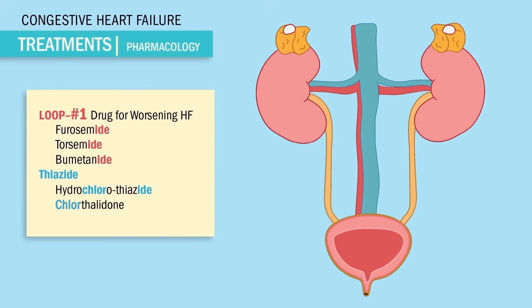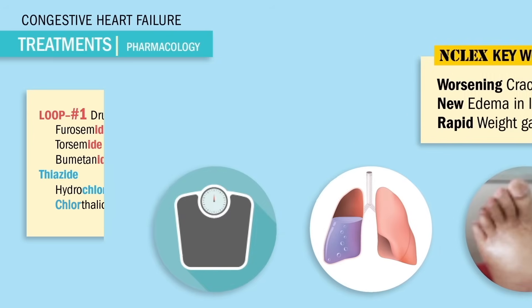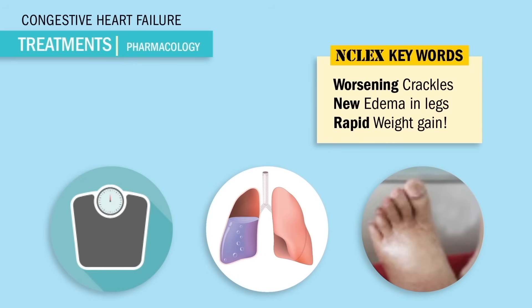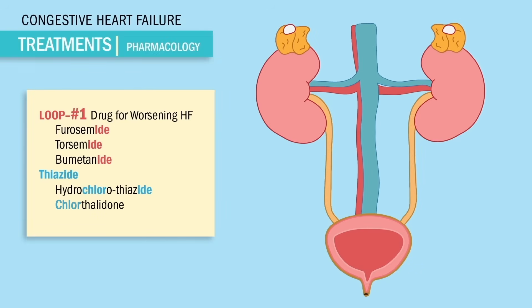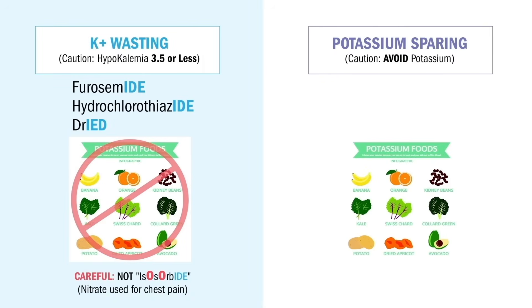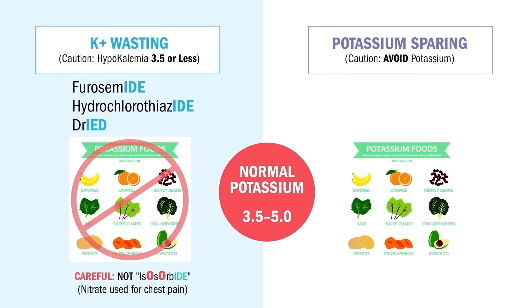NCLEX keywords for loop diuretic use include worsening crackles, new edema in the legs, and rapid weight gain. We give '-ides' to make the body dried — they work by blocking the reabsorption of sodium in the kidneys, so with less sodium retained we have less swelling. We only give potassium wasters if potassium is normal, between 3.5 and 5.0.